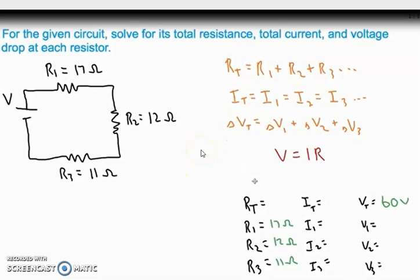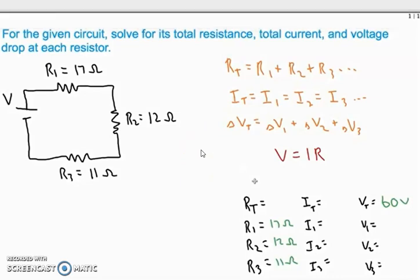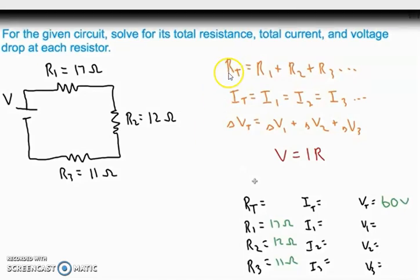What we need to do is to find out RT first. So by using the first formula RT equals R1 plus R2 plus R3, we are going to calculate RT and it comes out to be 40 ohms.